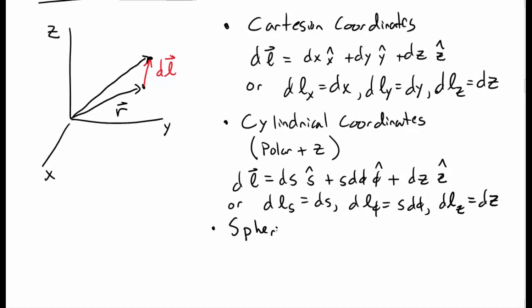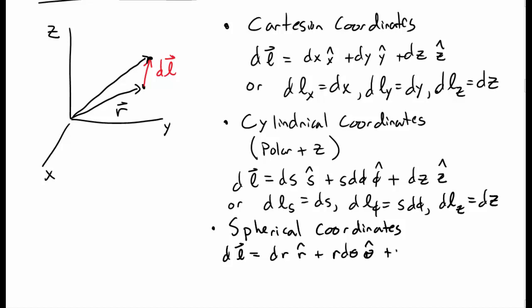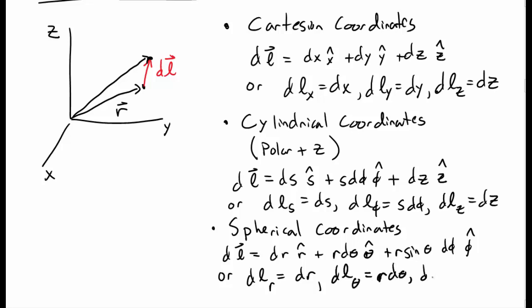In spherical coordinates, we describe a point by the radius and two angles. dl vector is dr in the r direction, r dtheta in the theta direction, and r sine-theta dphi in the phi direction. We can write this out in components, which is often more useful — the displacement in each of the radial and the two angular directions. This is the idea of the displacement vector for 3D curved coordinate systems.